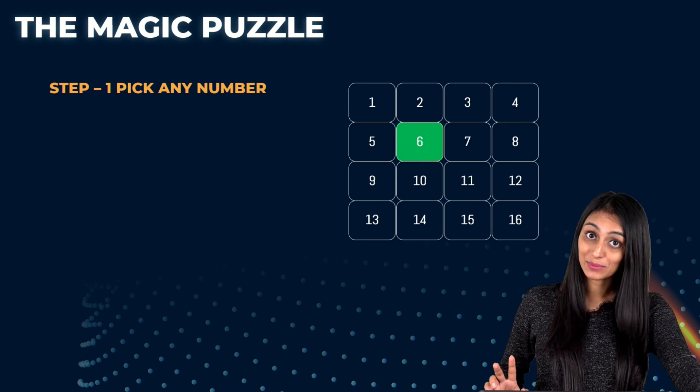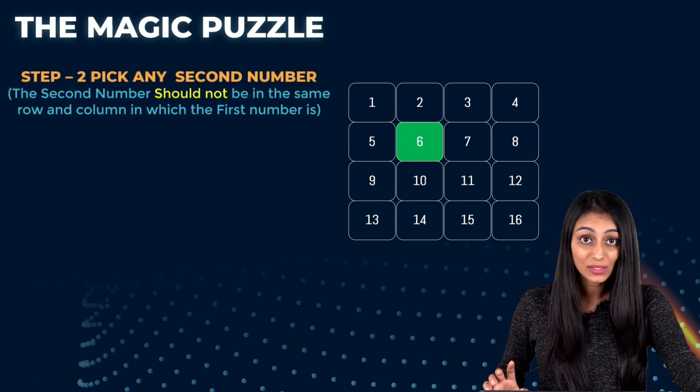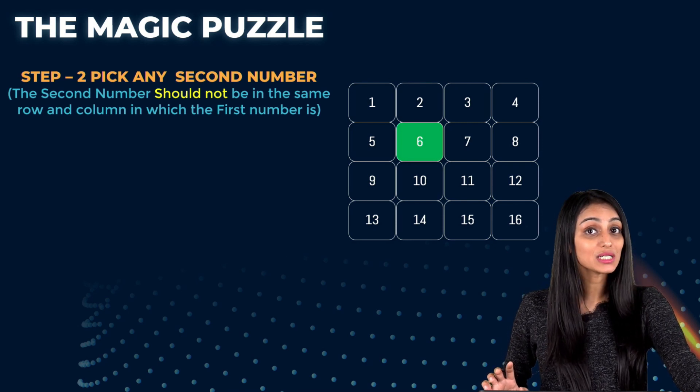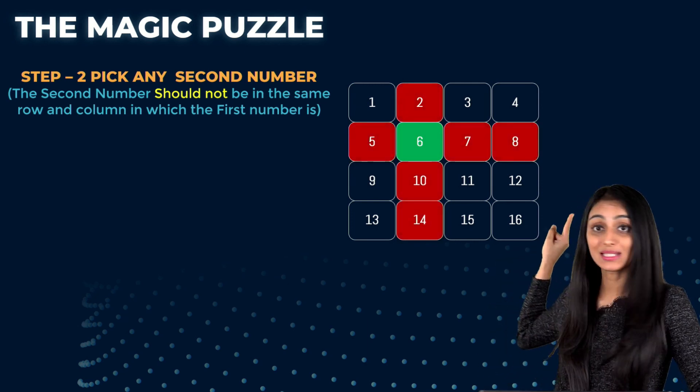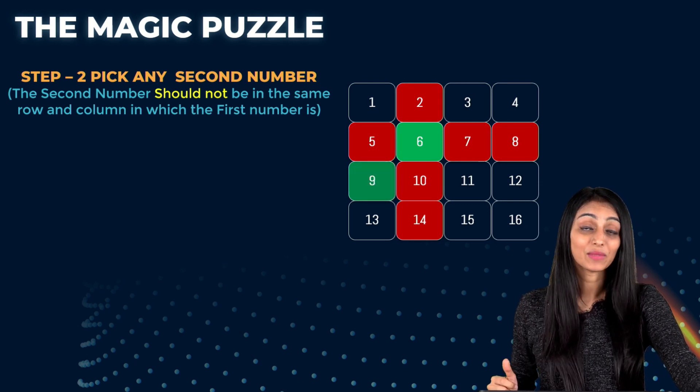Now it's time to pick up the second number. So we can pick up any number but we need to make sure that the second number should not be in the same row and same column in which the first number is. That means the second row and second column over here. The numbers are highlighted in red. We cannot pick up any number from here. So let's say I pick up nine.